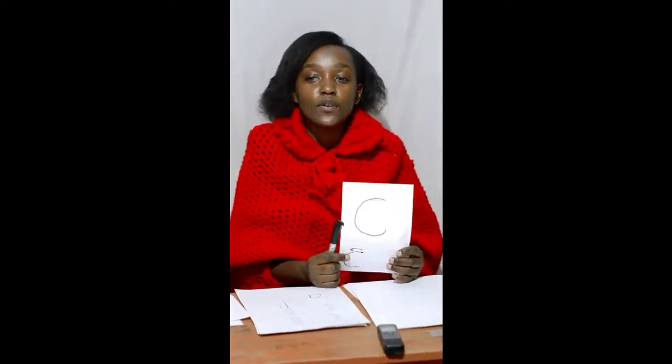Now we want to talk about sound 'k'. With sound 'k', you have to start from this point — you go round like this: 'k'. So you start from here, from this point, and you go round. That is how you form sound 'k'.